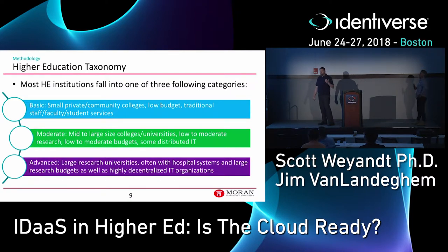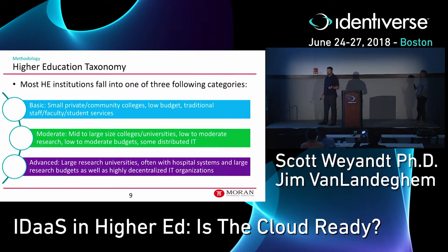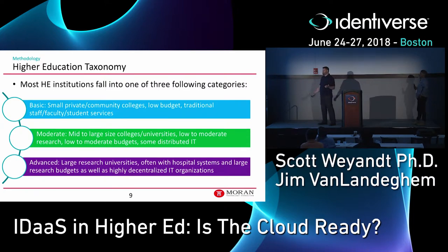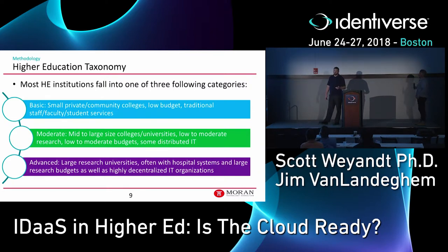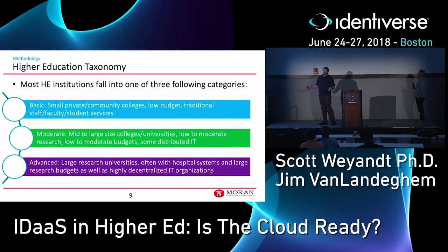Now that we understand how vendor functionality maps to the TIER architecture, we can talk about how most higher education institutions fall into three categories. To develop these categories, we used criteria such as budget, complexity, and IT organization — whether it's centralized or decentralized — as well as size. Basic: small private community colleges are often concerned with just getting users accounts provisioned in time. Many are doing manual processes and want automation to improve user experience. They often have a low budget and aren't very complex — they have regular undergraduate students, faculty, and staff.